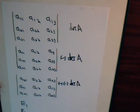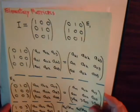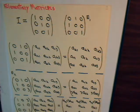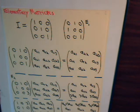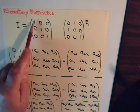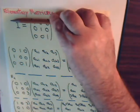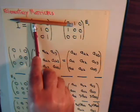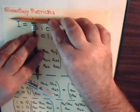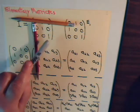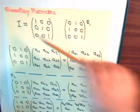Now, what about the elementary matrices themselves? What determinants do they have? For the identity matrix, the determinant is just one. You can obtain that by multiplying the diagonals together. Using cofactor expansion, it would be one times the determinant of the two-by-two submatrix, which is just one times one times one.